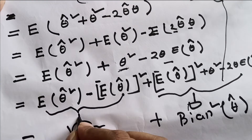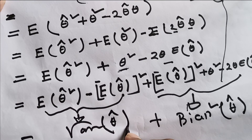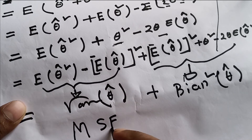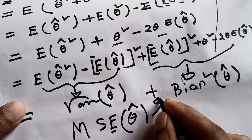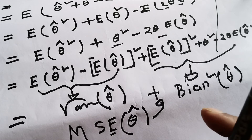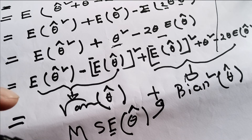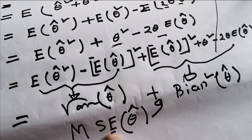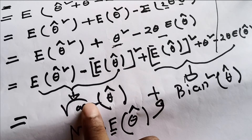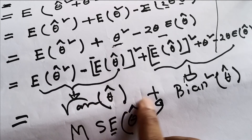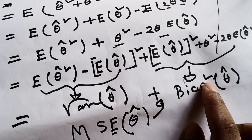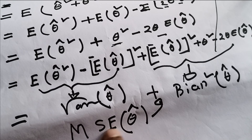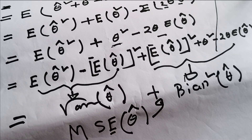So our proof is complete: MSE of theta-hat equals variance plus bias squared. One more important thing — MSE is very important because in its analytical form we can derive both variance and bias. In cases of unbiased estimators, bias goes to zero, and the total error depends only on the variance. This is why MSE is so important. Thank you very much for watching this video.